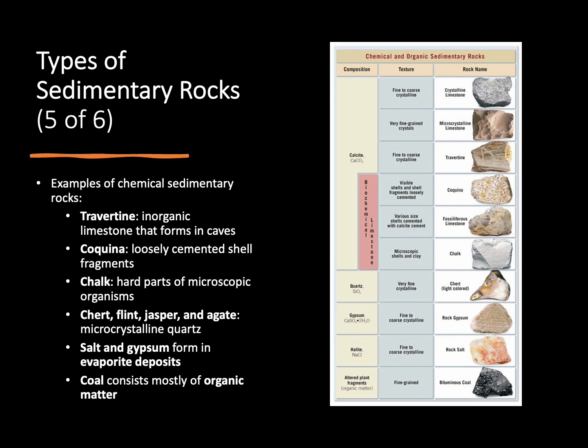When we're looking at sedimentary rocks, we can look at their different properties to come up with specific rock names. Some of the common chemical sedimentary rocks we see are travertine, a type of limestone that forms around caves. We have coquina, which is just a bunch of shell pieces that have been glued together. We have chalk, which is one of my favorites. As well as some crystalline deposits like rock salt and gypsum. And then finally, coal, which is very different because it's made up of organic matter — specifically fossilized plant material.